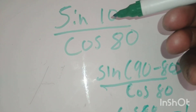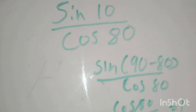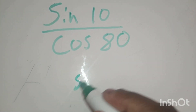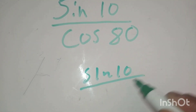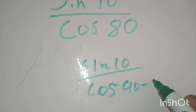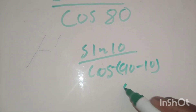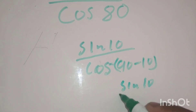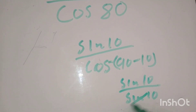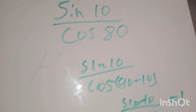Now I'm going to change the bottom instead of the top. If I change the bottom, 80 is the same as 90 minus 10. So it means sin(10) over cos(90 minus 10). Then since cos(90 minus theta) is sin(theta), we get sin(10) over sin(10). This just cancels out and gives you 1. Whenever these two numbers add up to 90, you can change either the top or the bottom.